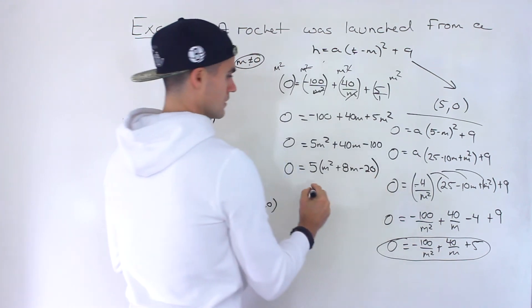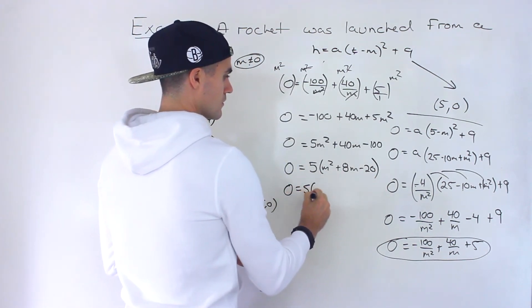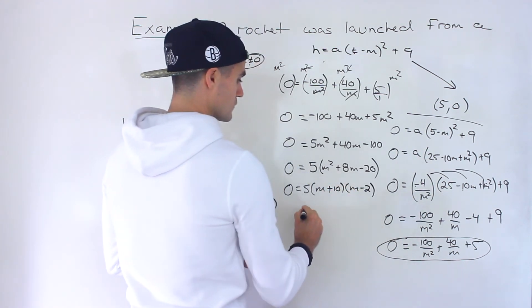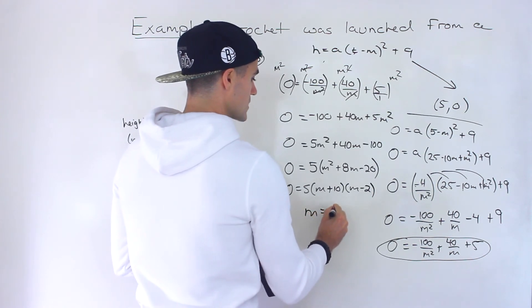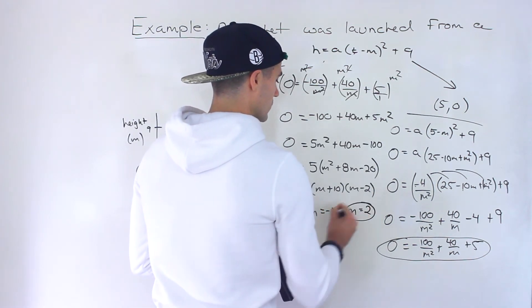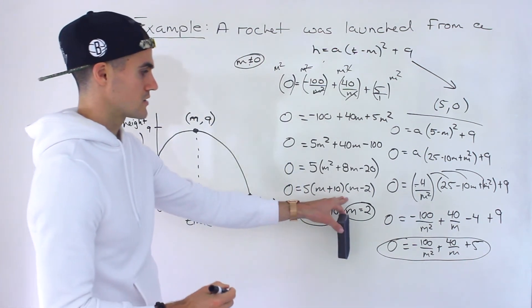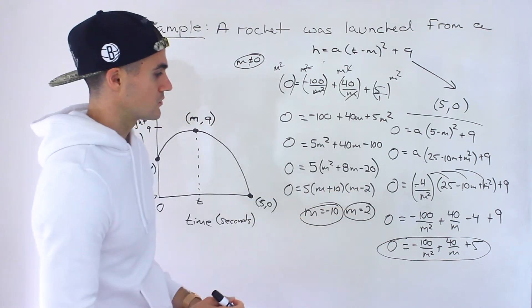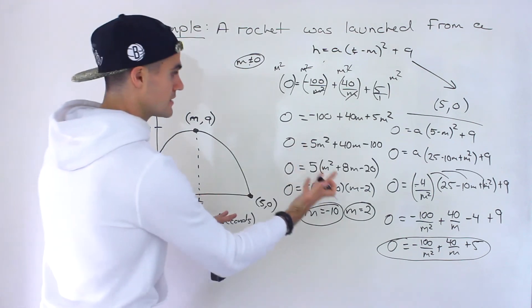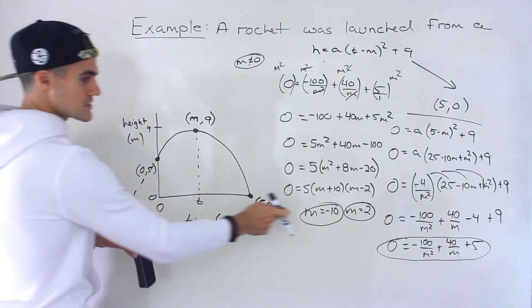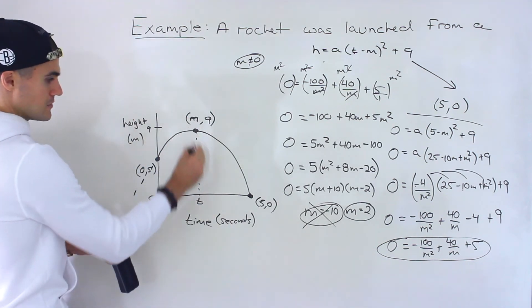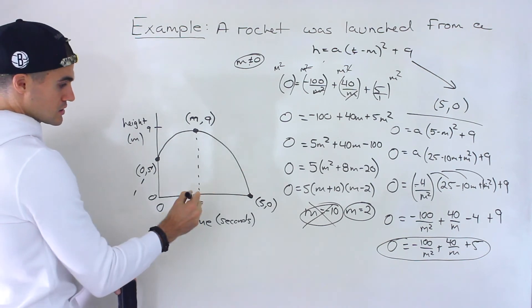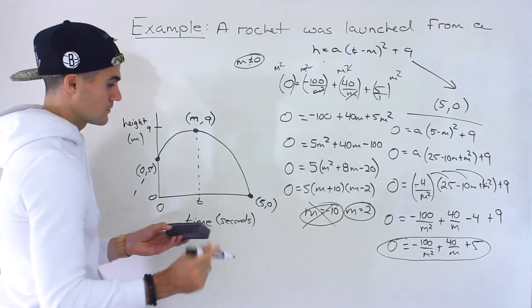So M = −10 or M = 2. When we relate this back to the actual problem, M can't be −10 because M represents time, and time can't be negative. So M = 2, and that's the answer.